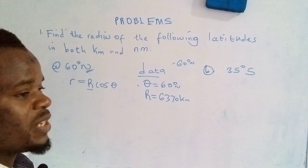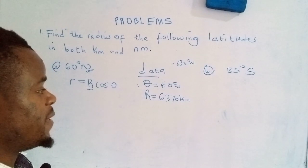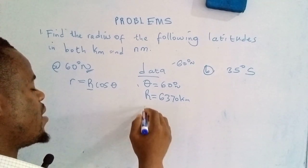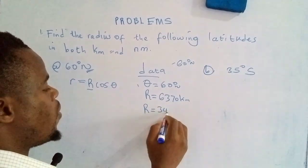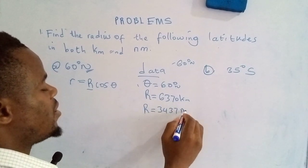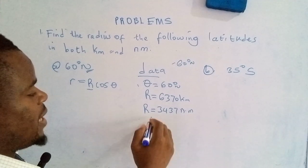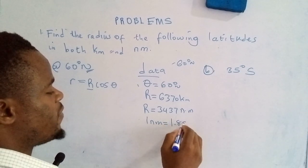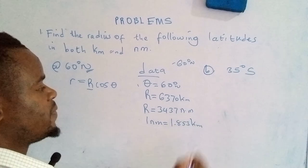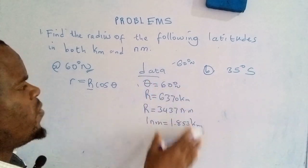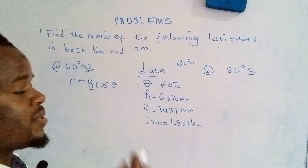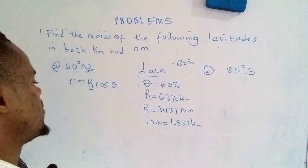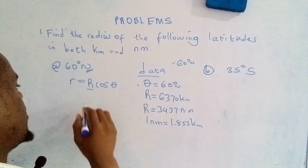The radius of the Earth can either be given in kilometers or nautical miles. Radius of the Earth in nautical miles is 3437 nautical miles. You also need to know that one nautical mile equates to 1.853 kilometers. So with all these in place, we can now determine the radius of the latitude 60 degrees north by simply plugging in these values in the equation.